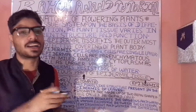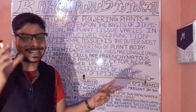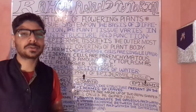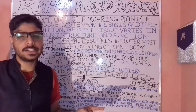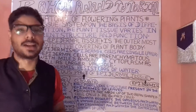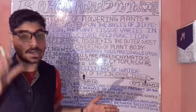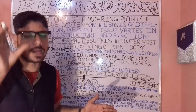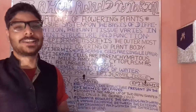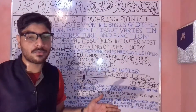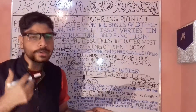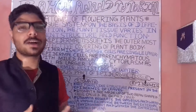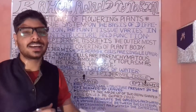Let's understand the epidermal appendages, which are components and parts of the epidermal tissue. Epidermal appendages involve outgrowths on the outer surface. These bear hair-like projections on the surface of the shoot and roots. In the case of the shoot, these hair-like projections are given a specialized name and are known as trichomes.